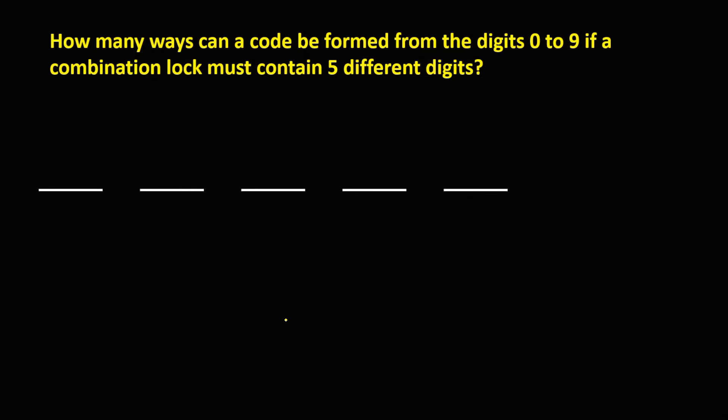To find the total combination for the first code, since the numbers 0 to 9, we have 10 numbers. So for the first code, we have 10 possible numbers, that's 0 to 9.